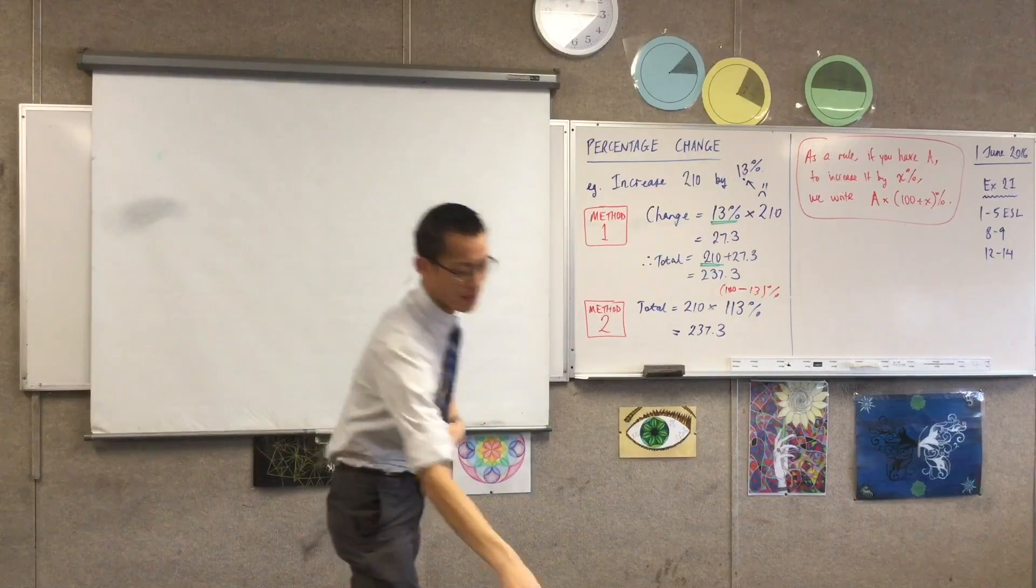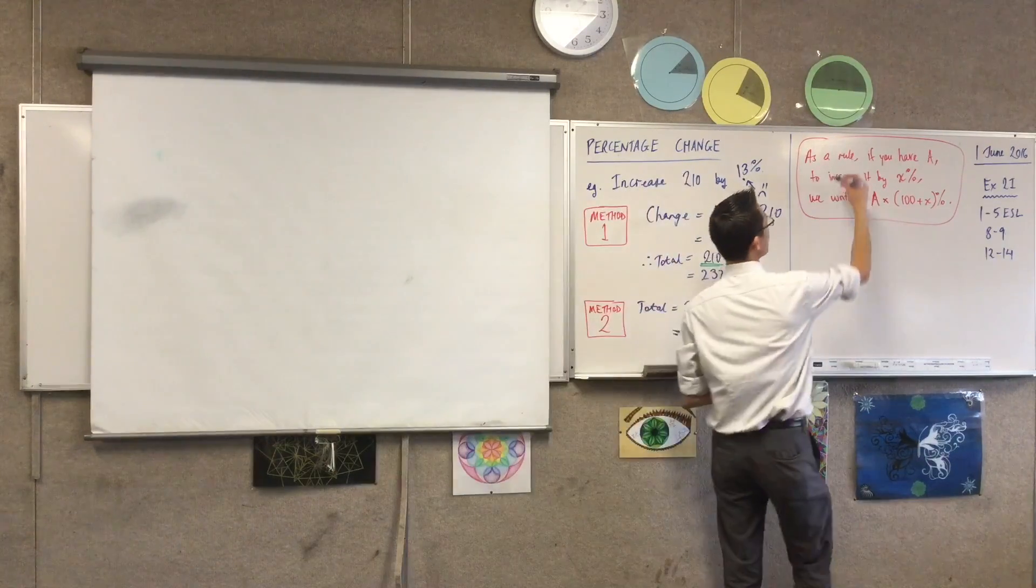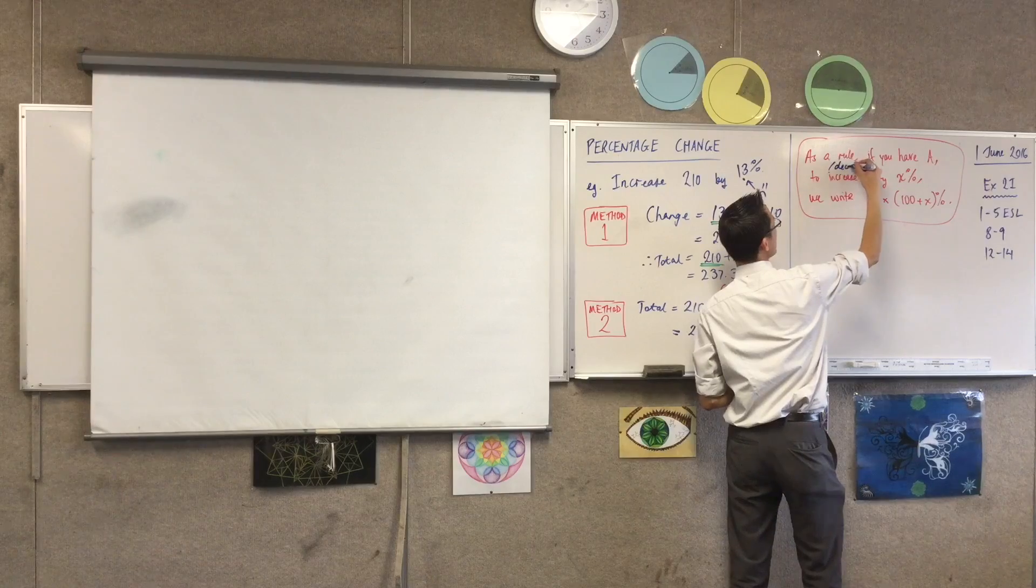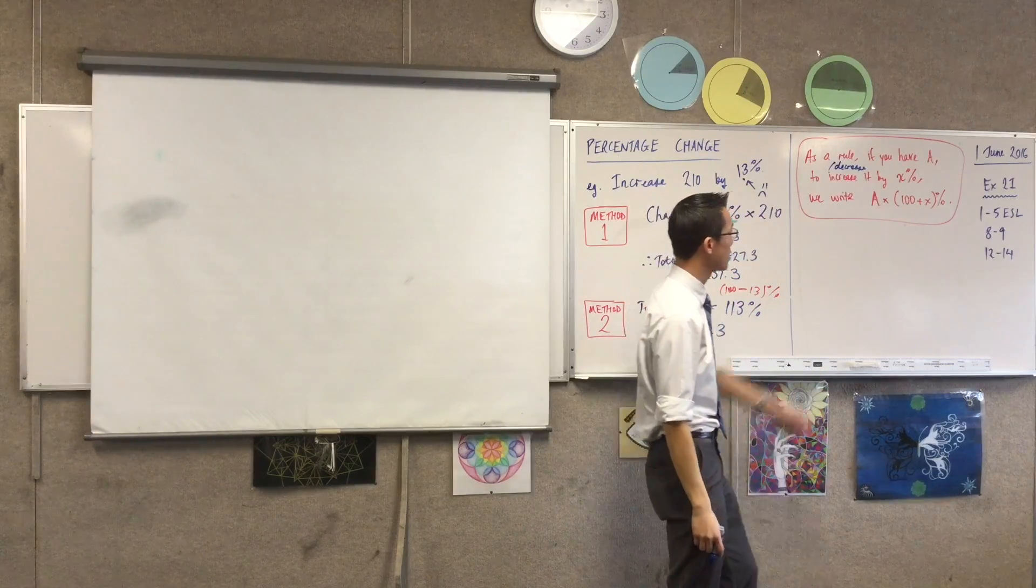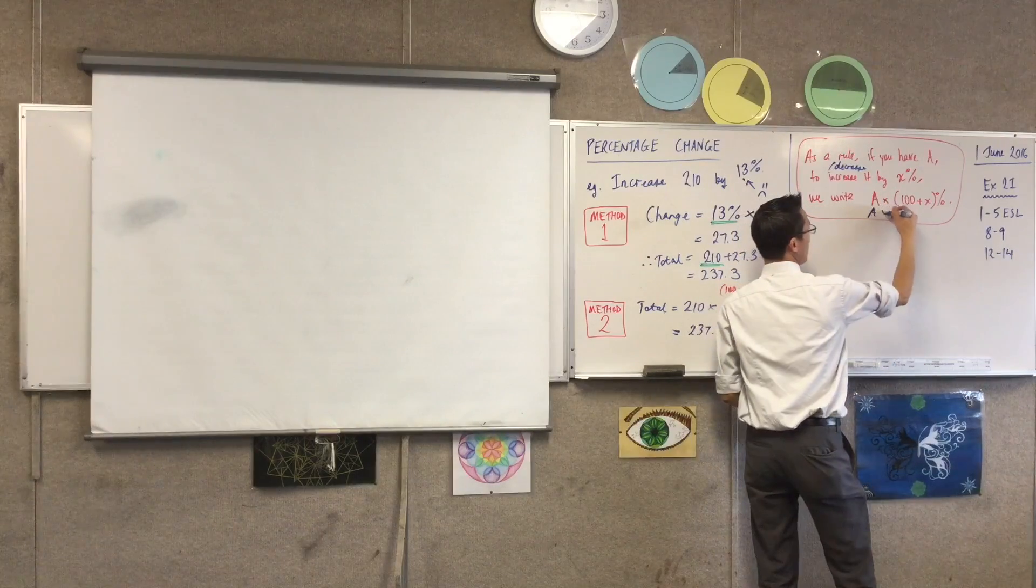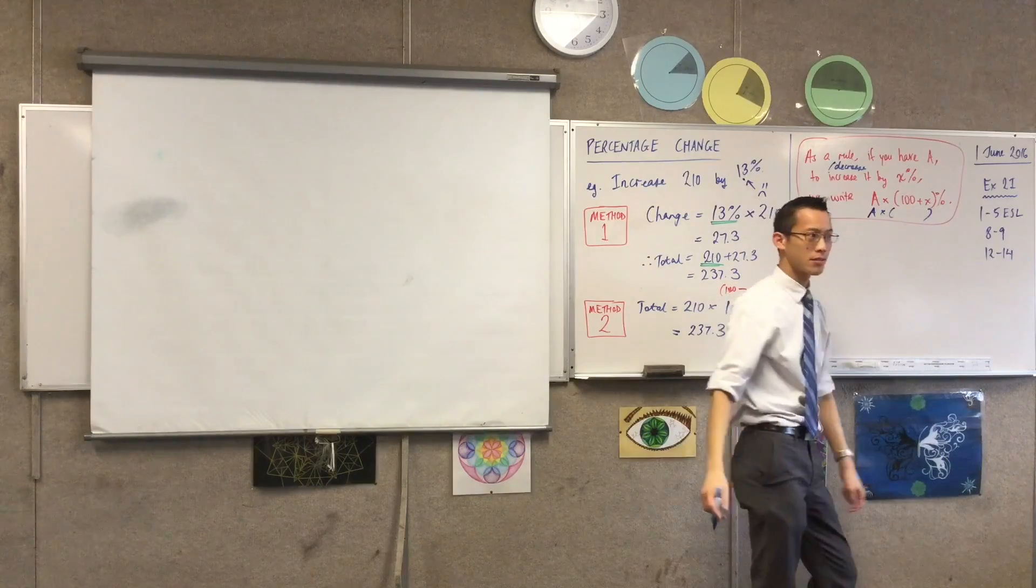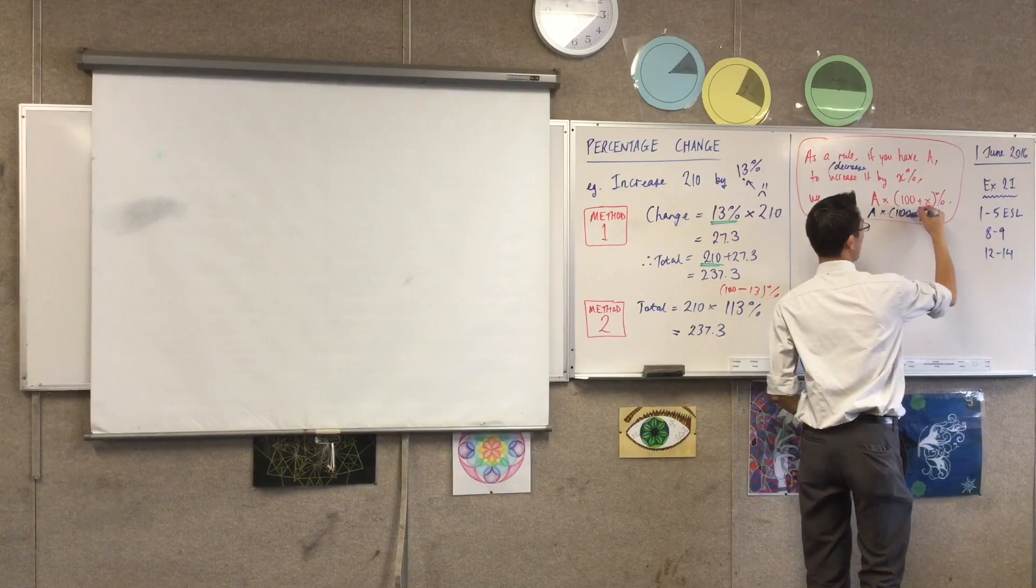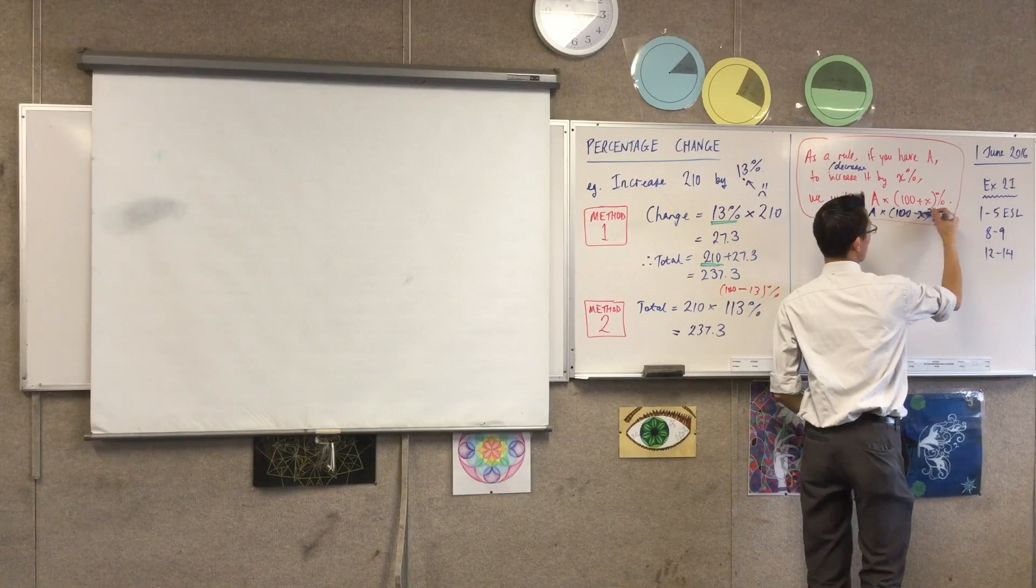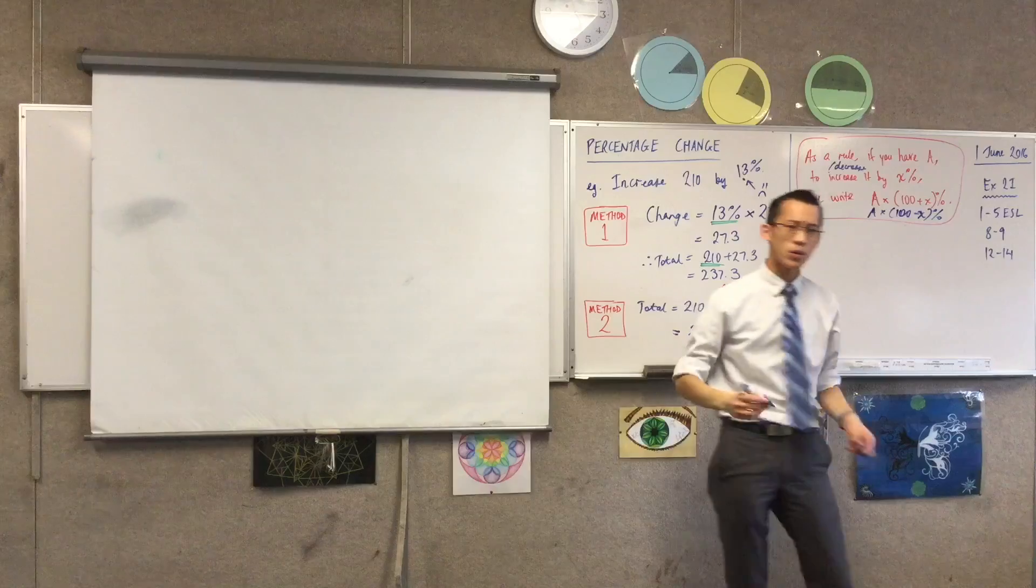So if you want, just like this, if you have another color, if you change this to decrease, if you want to decrease by X percent, instead of increase, the only difference here, would be A times, what's in the brackets? 100 minus X. 100 take away.